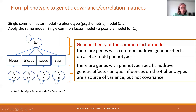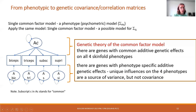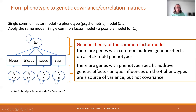Applying the common factor model to sigma A, for example: at the top we have the common A factor that influences all the phenotypes, meaning there are genes with common additive genetic effects on all four skinfold phenotypes. Below, there are also phenotype-specific additive genetic effects — unique influences on each of the four phenotypes. These unique effects are only a source of variance for those phenotypes, not of their covariance; they make the phenotypes more different from each other.